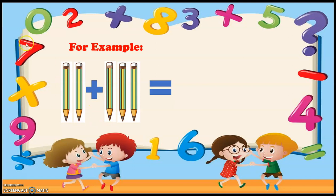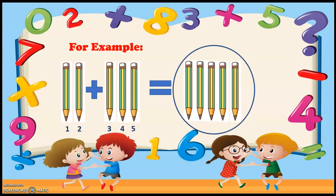What is the total answer? I will count each and every pencil: one, two, three, four, five. So there are total five pencils. When we take the sum of two and three pencils, we get the answer five. The plus sign is showing me that I have to add these values.